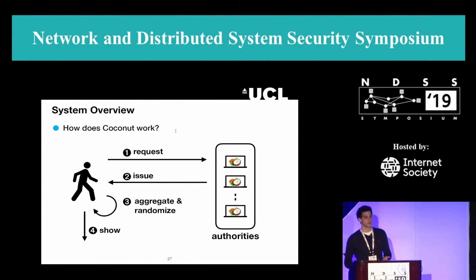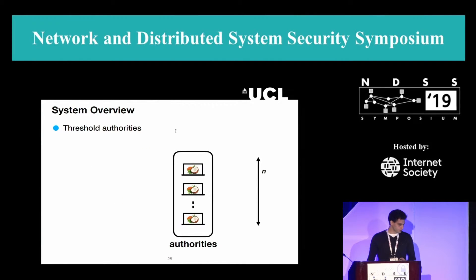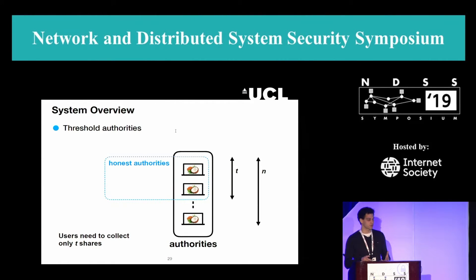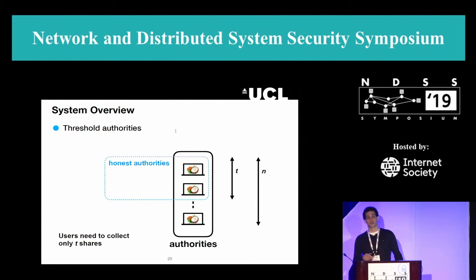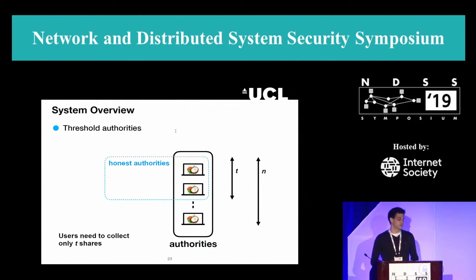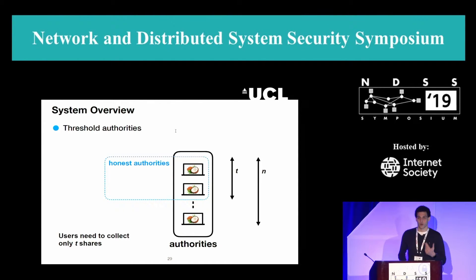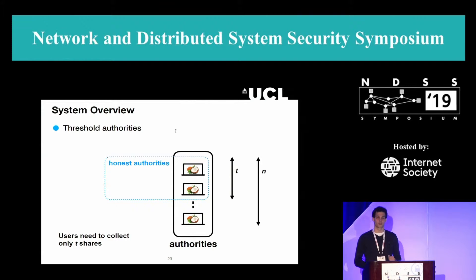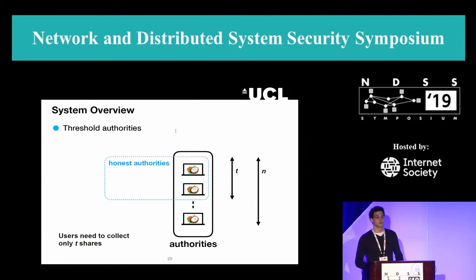In the general framework: a user issues some requests to a set of authorities. Those authorities answer back with a piece of credential each. The user aggregates them, randomizes them, and then can show the credentials multiple times, but needs to randomize them before each showing. The threshold authority setting means you have N authorities but only T of them are necessary — any subset of T authorities — for the user to re-aggregate T pieces into one consolidated credential. This maps to BFT settings where you can tolerate up to F malicious nodes, mapping T to a setting where you need 2F+1 honest authorities.